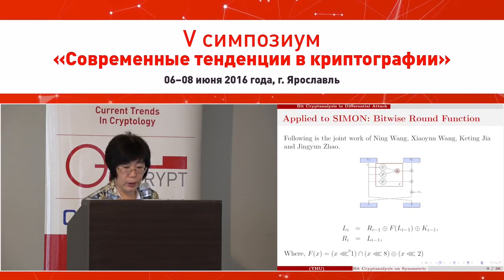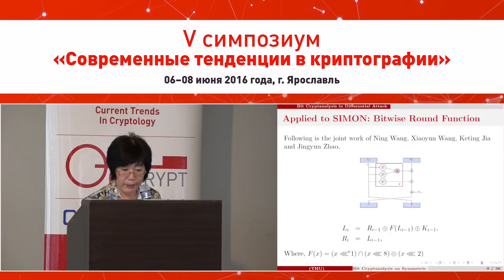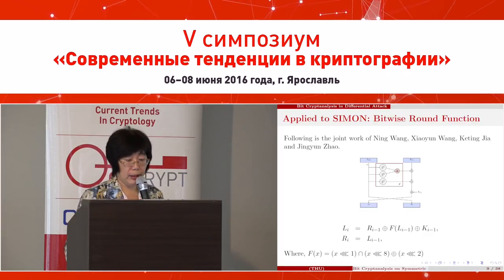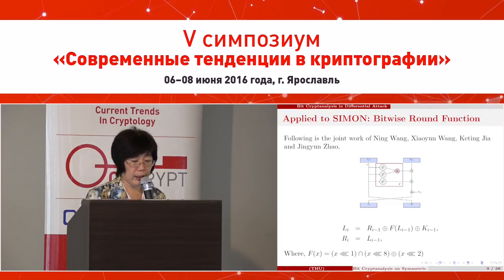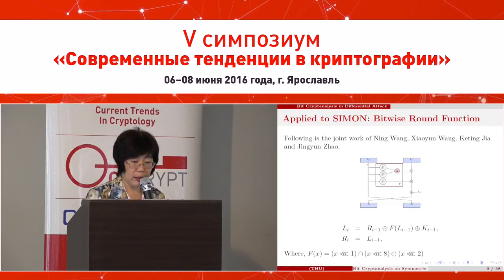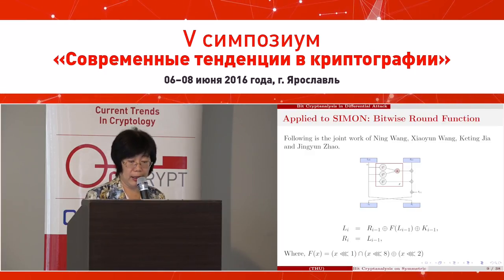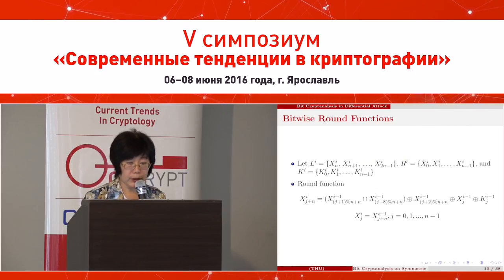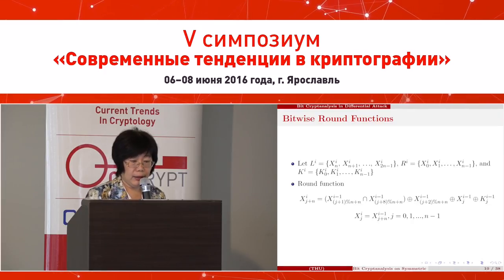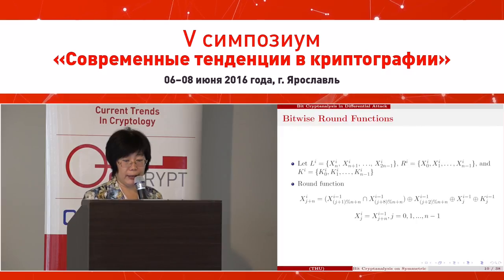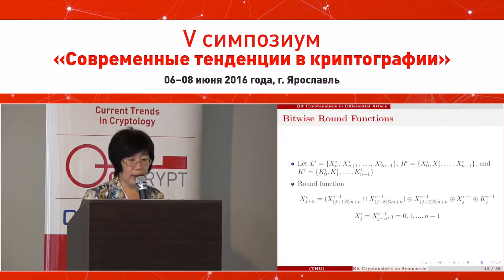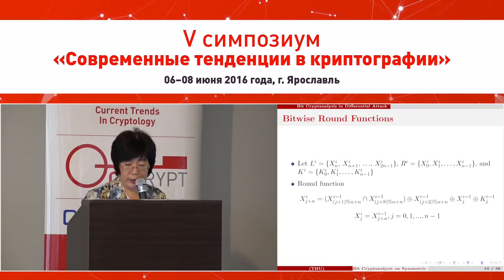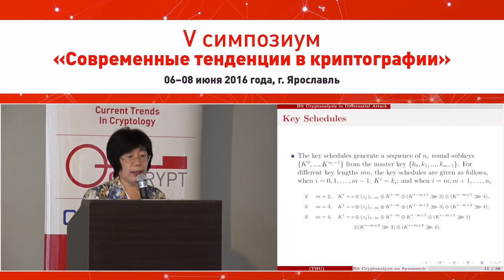For the round function, it is very simple because the function only includes shifts, XOR, and bit-wise AND operations. We give the bit equations about the round function. The equation is xj plus n, and this is the key schedule.